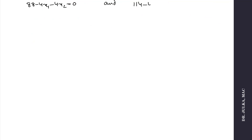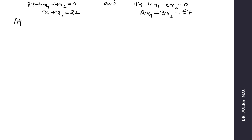So 88 minus 4x1 minus 4x2 equals 0 and 114 minus 4x1 minus 6x2 equals 0. After simplification, we get x1 plus x2 equals 22 and 2x1 plus 3x2 equals 57. After solving these two equations, we get x1 equals 9 and x2 equals 13.